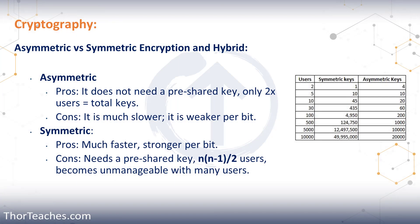Now let's talk about asymmetric encryption. We have for thousands of years used symmetric encryption, where both the sender and receiver have the same key. But asymmetric encryption is a very young technology, at least compared to symmetric. We have used asymmetric encryption for practical purposes for maybe 40-50 years, compared to the thousands of years we have used symmetric encryption.